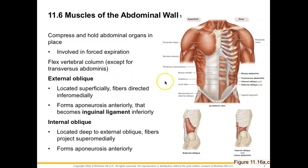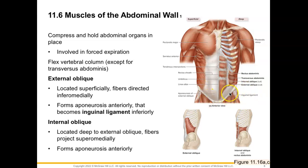First we'll talk about the external oblique muscle, which is on the lateral side of our abdomen — the most superficial muscle on that lateral side. We see that the fibers are moving inferior medially, and as we continue medially, it forms an aponeurosis. Moving inferiorly, the aponeurosis of this external oblique will create the inguinal ligament.